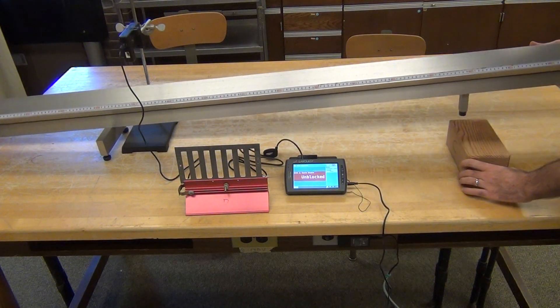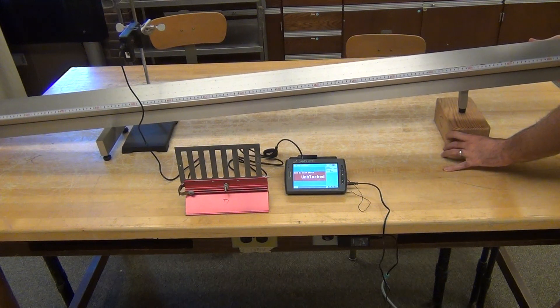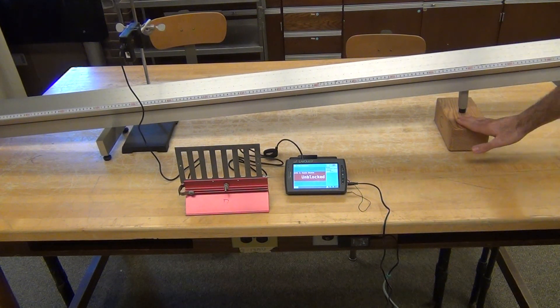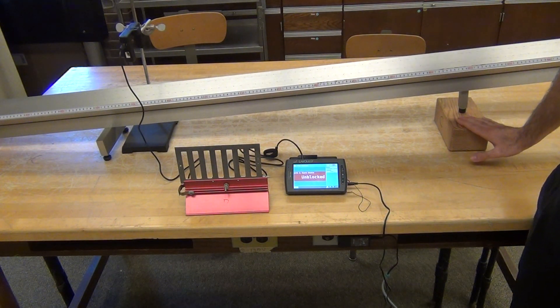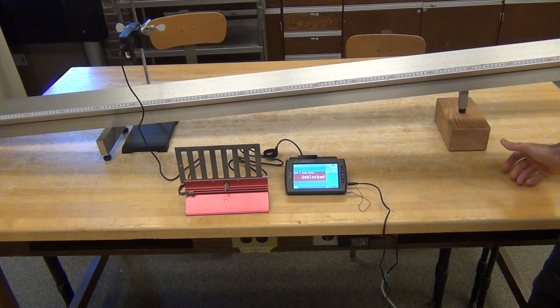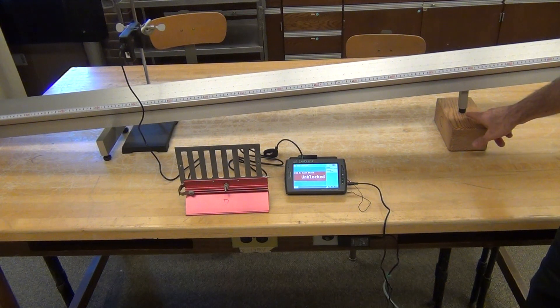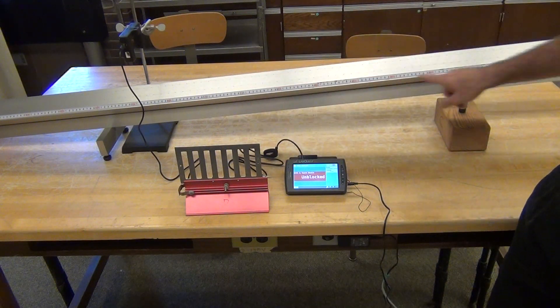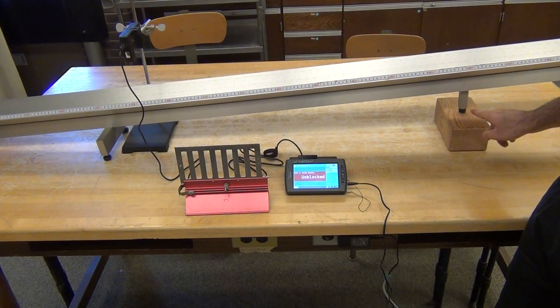I'm going to lift up one end of the air track and slide the block underneath it. The supports on the air track are exactly one meter apart, and so I now have a triangle where I know the hypotenuse and the height.